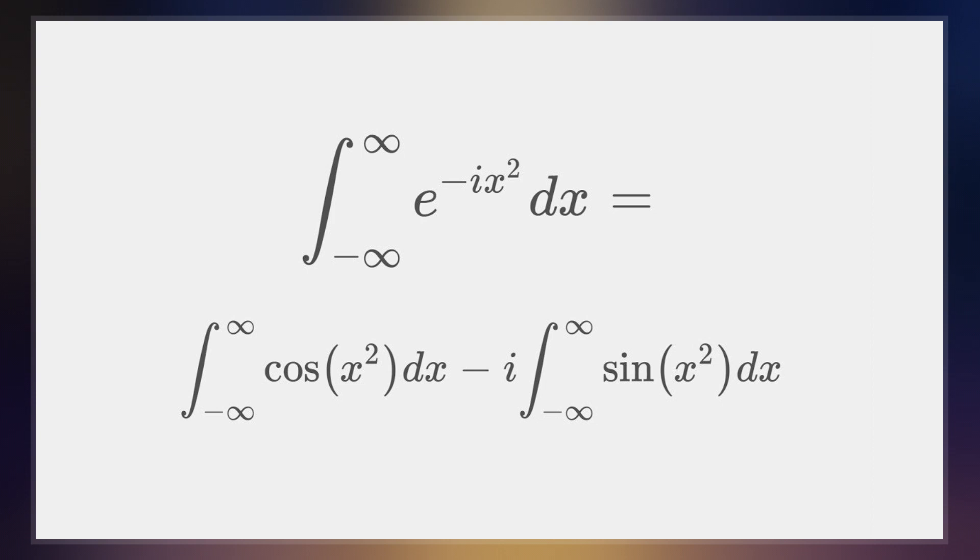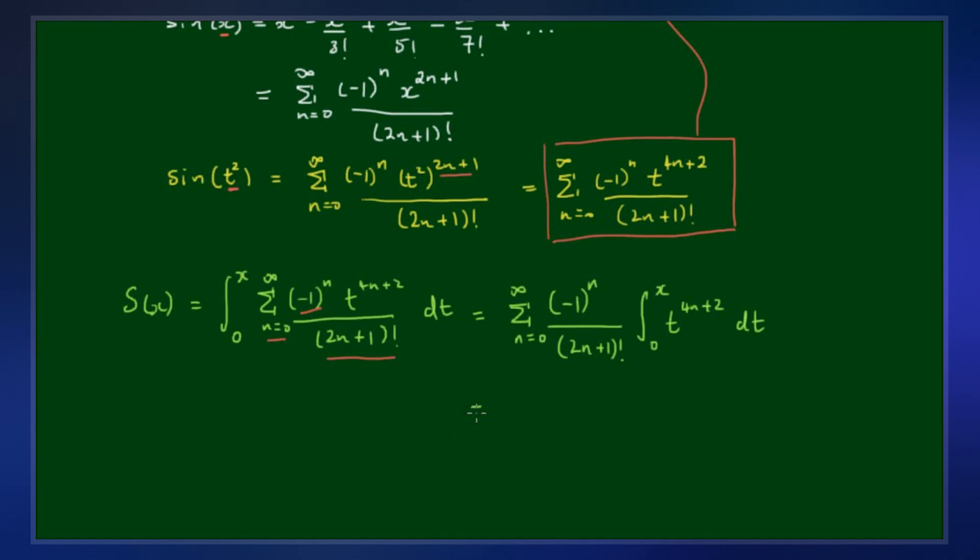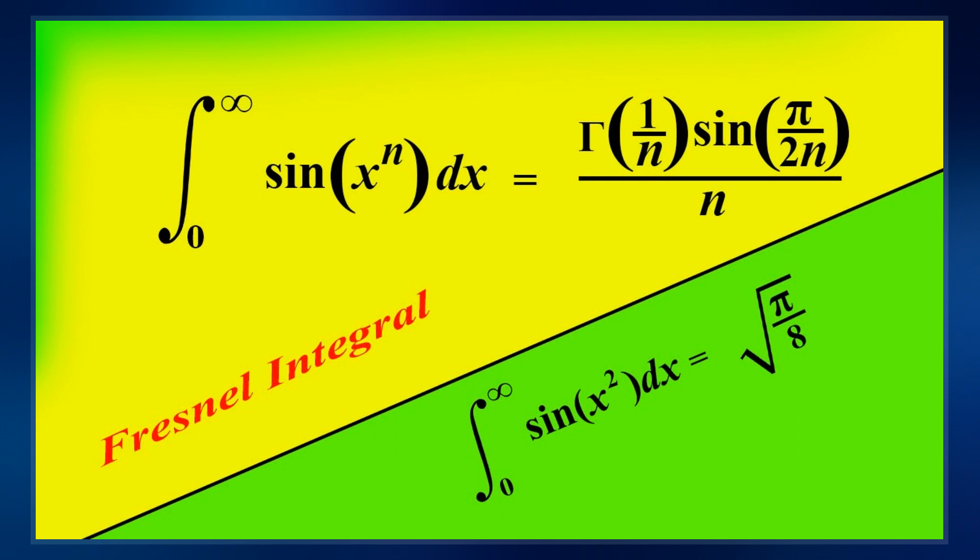They arise in the description of near-field Fresnel diffraction phenomena and are defined through the following integral representations. The simultaneous parametric plot of S and C is the Euler spiral.